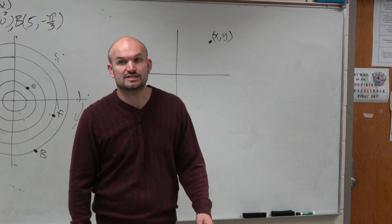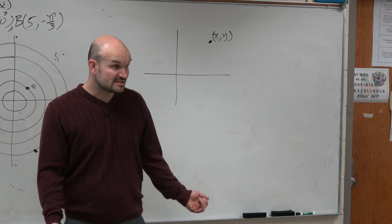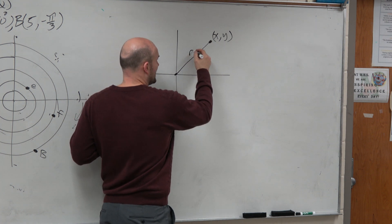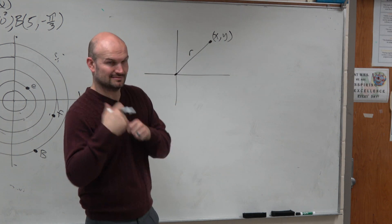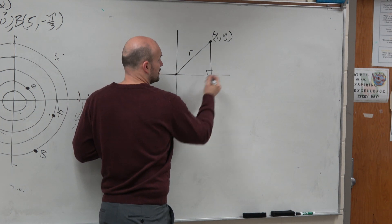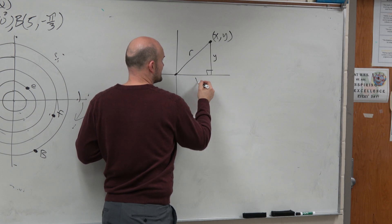And we said yes. If we created a distance from the origin and we called that r, hint, hint, r, right? Then we could create a right triangle and we could say that's y and that's x.